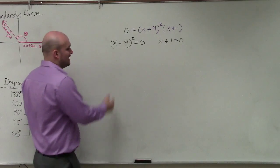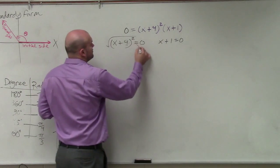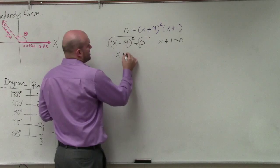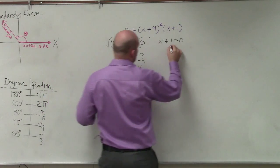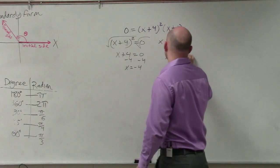So now we can go ahead and use inverse operations to solve. Take the square root, so I have x plus 4 equals 0, minus 4, minus 4, x equals negative 4. Minus 1, minus 1, x equals negative 1.